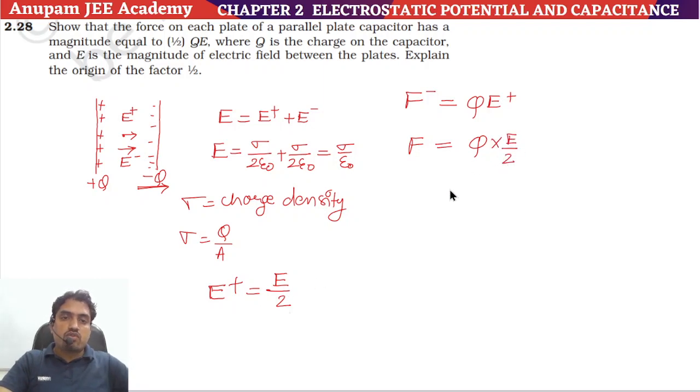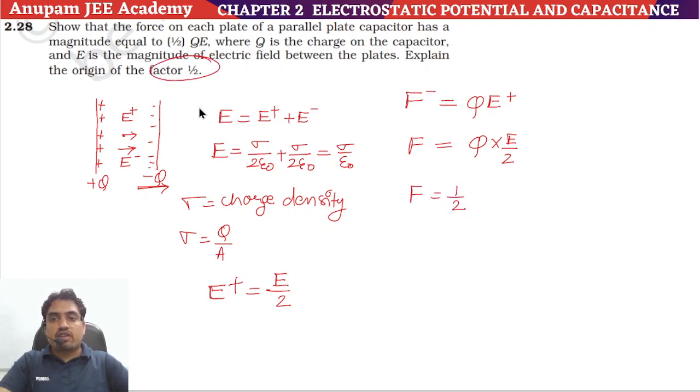So now you can understand what the factor 1/2 is. The factor 1/2 arises because the force on the negative plate is due only to the electric field of the positive plate, which is half of the total electric field inside the capacitor.